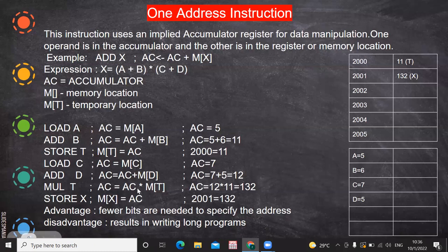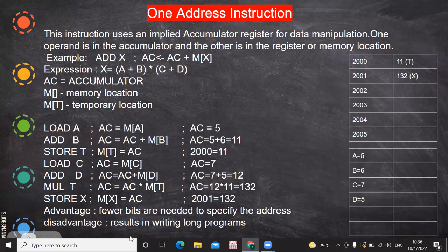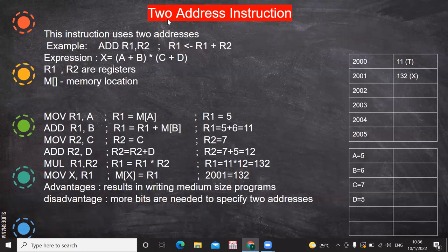The accumulator already has 12, and M[T] holds the A+B value of 11. So 12 multiplied by 11 equals 132. Finally, we store the result in a memory location M[X]. The advantage of one-address instructions is that fewer bits are needed to specify the address. The disadvantage is that we still have to write many lines — long programs.